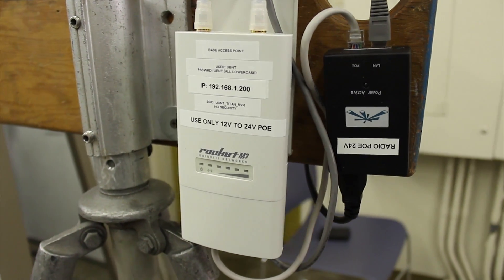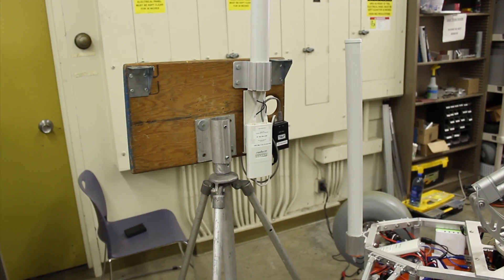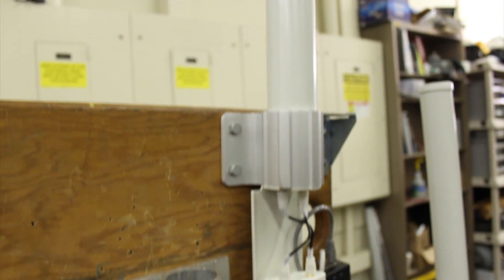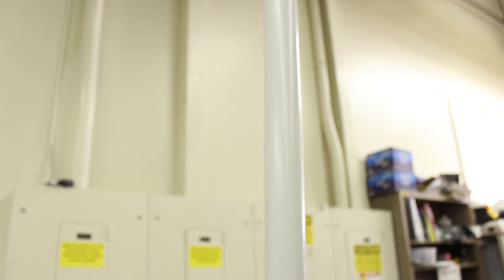Our communication system has also been upgraded by using a point-to-point ubiquity network, which gives us two main benefits: high bandwidth at a distance, allowing for video feedback and rover data to be exchanged without issues, as well as allowing us to operate on a less utilized frequency to prevent interference with other teams.